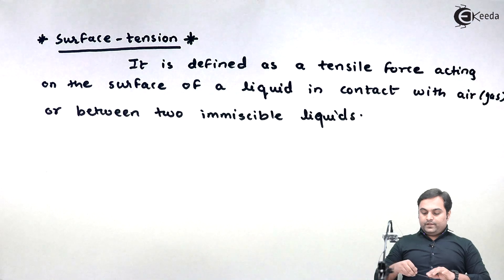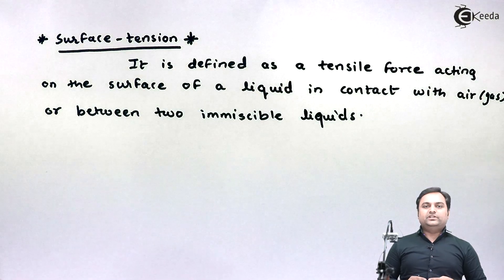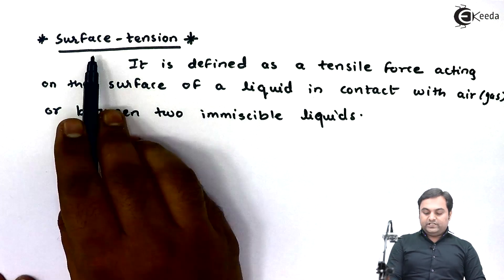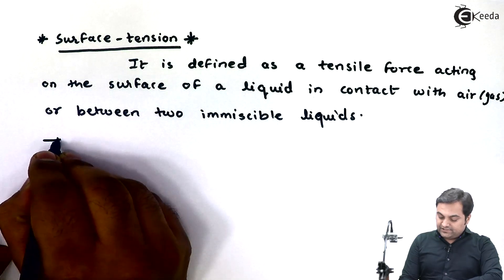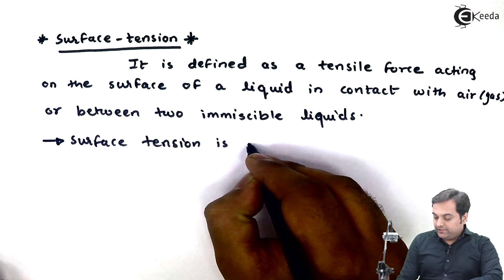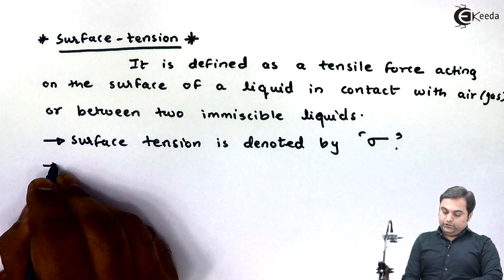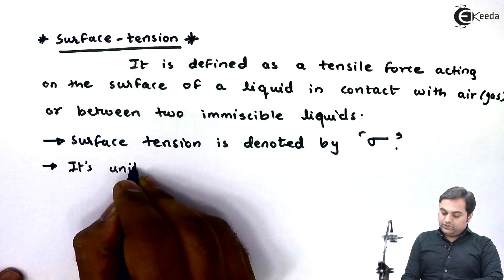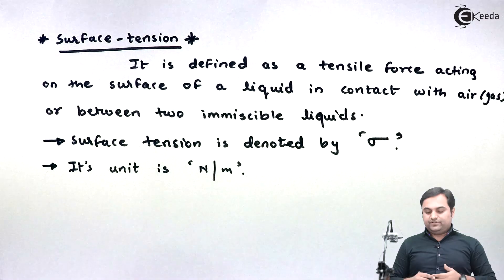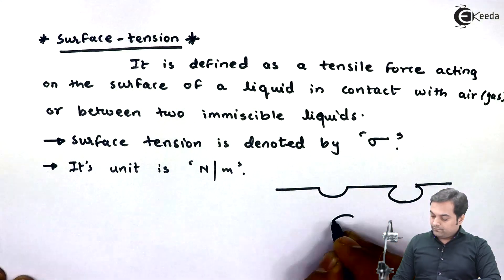Surface tension can exist between a liquid and gas, or between two immiscible liquids. For example, if one liquid is floating over another liquid, there is also a tensile force at the surface, and that tensile force is called surface tension. Surface tension is denoted by the letter sigma. Its unit is Newton per meter, because it is force per unit length of the surface.